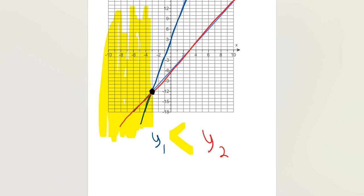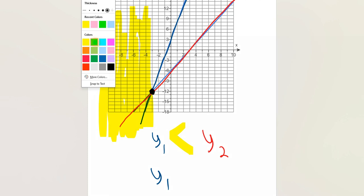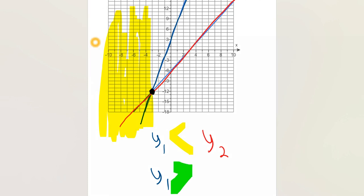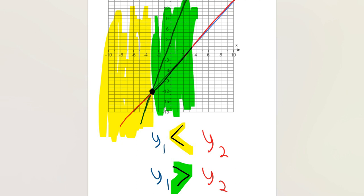If it had said where is y sub 1 greater than y sub 2, where's the blue line above the red line? That would occur over here on this side.